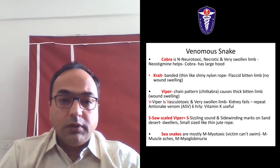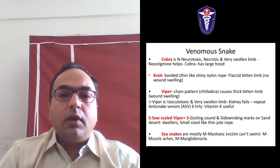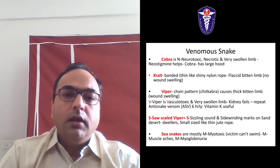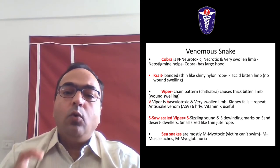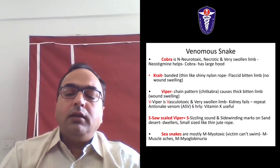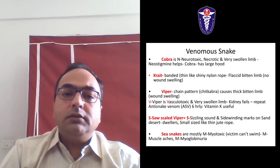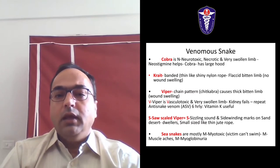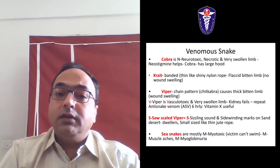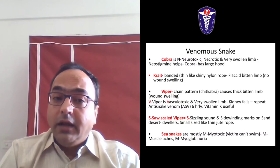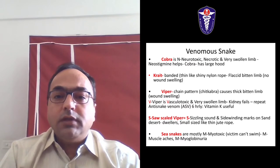If the person is bleeding profusely from sites like the oral cavity, or if hematuria occurs, the 20 WBCT test is done - keeping whole blood in a vial for 20 minutes. If it does not clot after 20 minutes, that is a sign of vasculotoxic envenomation. This helps identify that it is a vasculotoxic snake and immediate anti-snake venom is needed to control the coagulopathy and stop the bleeding.